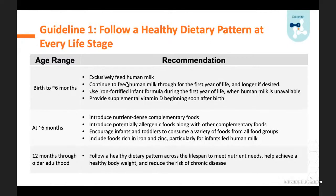For birth to six months, we basically said we already know what the dietary pattern should be: exclusively feed human milk. Continue to feed human milk throughout the first year of life or longer if desired. If human milk is not available, use an iron-fortified infant formula. Provide supplemental vitamin D beginning soon after birth. The dietary guidelines focus on food as a source of nutrients, but there are specific life-stage situations where supplementation is recommended, and this is one of them.